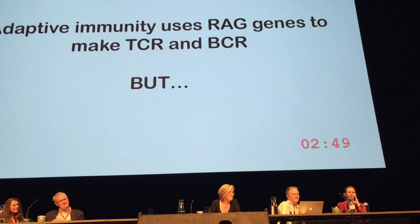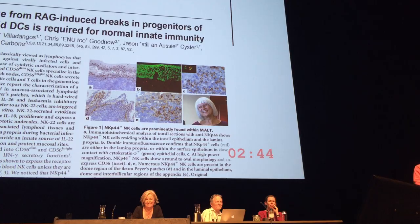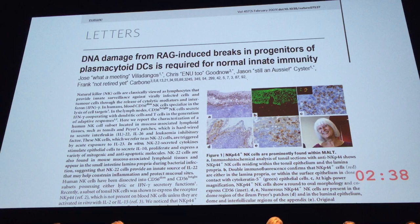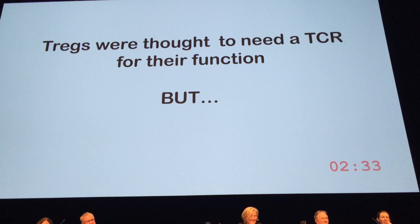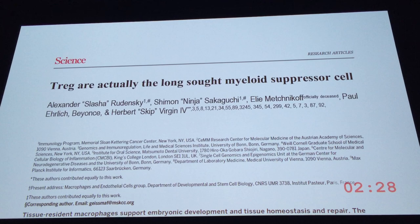Adaptive immunity uses RAG to make TCR and BCR repertoire, but the real function of adaptive immunity — as shown in a recent Nature paper — is that it's the DNA breaks that make plasmacytoid dendritic cells work.